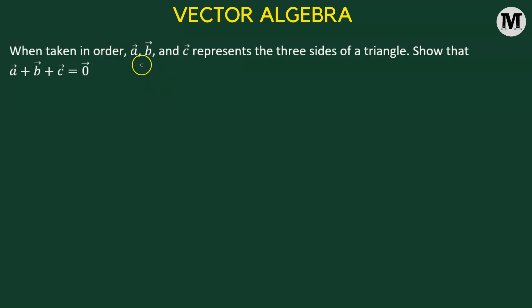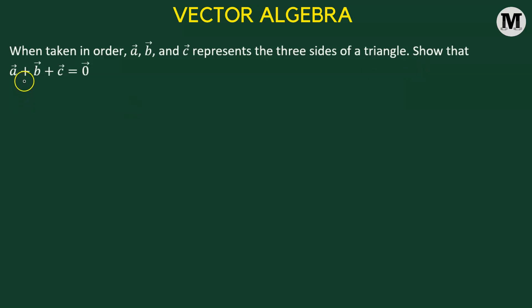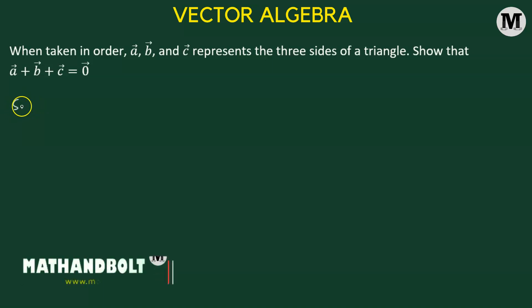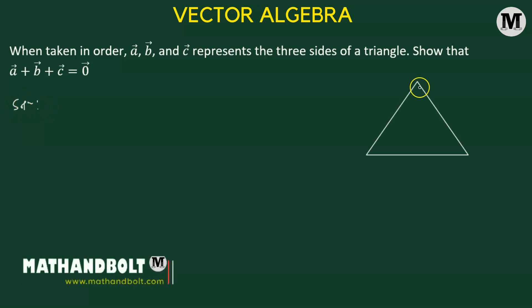When taken in order, vectors a, b, and c represent the three sides of a triangle. Show that the sum of the three vectors equals the null vector. Let us begin. First, we will consider a triangle with vertices a, b, and c.